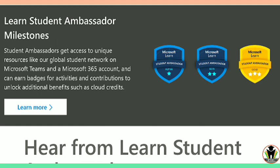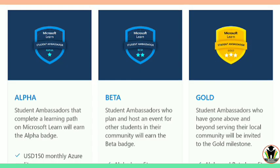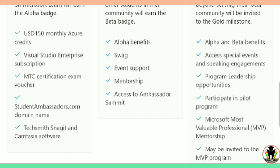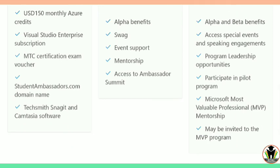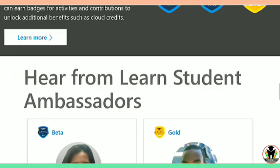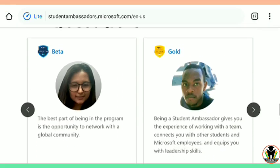What you get in this Ambassador program — there are three badges you can see on your screen. The three badges are namely Alpha, Beta and Gold. The rewards for each badge are shown on your screen. If you get Gold, then you get Alpha and Beta benefits, Microsoft's most valuable professional mentorship, and you may also be invited to the MVP program. Now I am going to explore a little bit more about these badges.